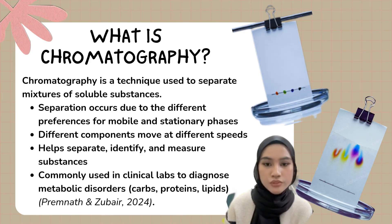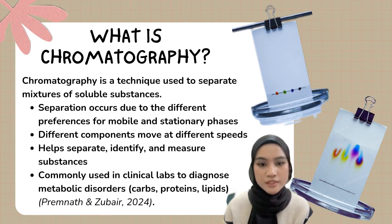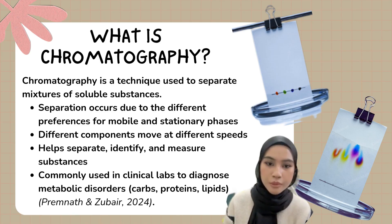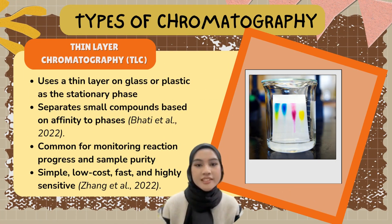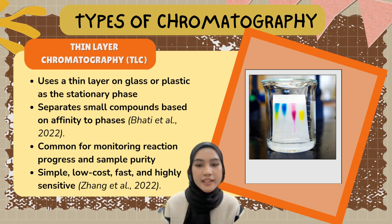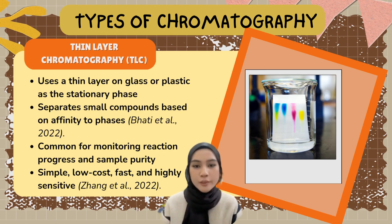Chromatography is useful not just for separating but also for identifying and measuring substances. It's commonly used in clinical laboratories, especially to help diagnose metabolic disorders involving carbohydrates, proteins, and lipids. There are several types of chromatography, but the three most common ones are thin layer chromatography, or TLC, gas chromatography, GC, and high-performance liquid chromatography, HPLC. Let's go through them one by one.